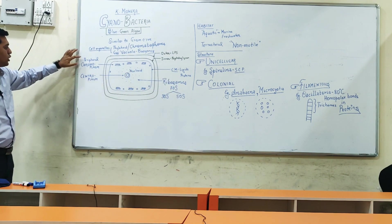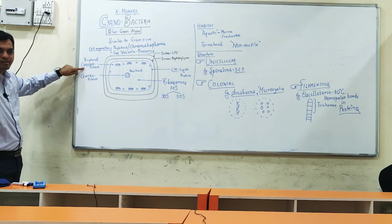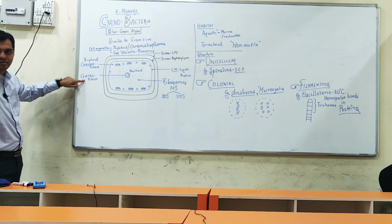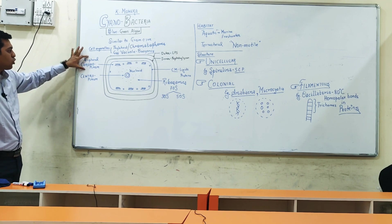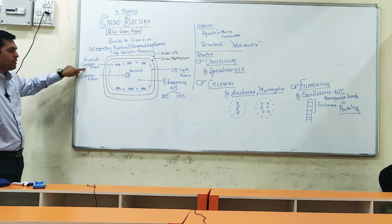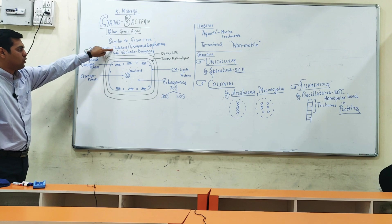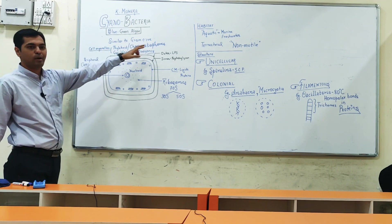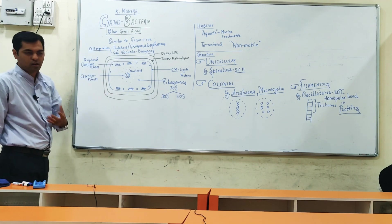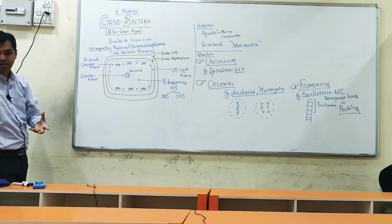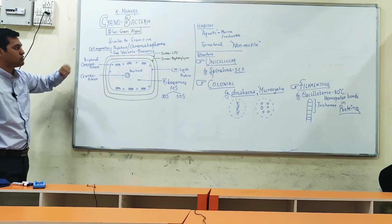...chromoplasm and centroplasm that is present in the central part. The peripheral chromoplasm contains color-containing structures, and those cell organelles are known as thylakoids, or they are also known as chromatophores, which are primitive types of cell organelles but they are membrane-bound. In fact, in spite of being prokaryotic, it has membrane-bound cell organelles.